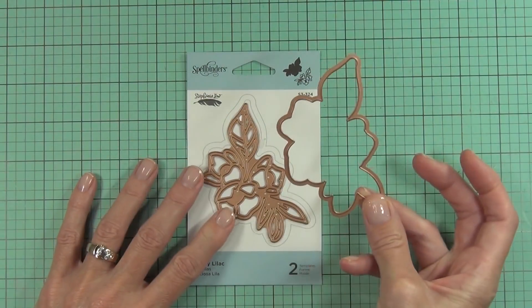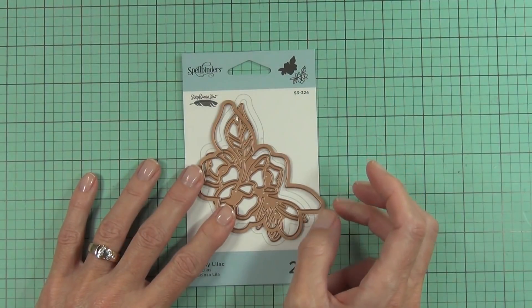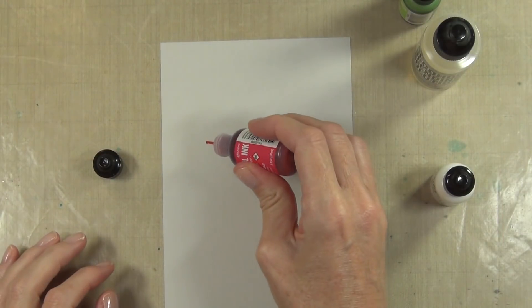What I love most about this set is it's a two-piece die set, so it actually comes with an outline die. You'll see what I mean in a minute.